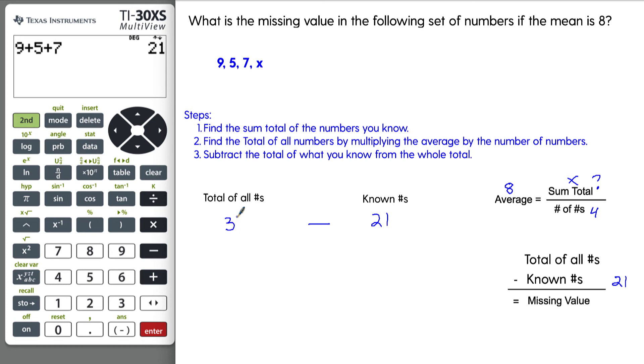So 8 times 4 is 32. Put it in the calculator if you need to. 32 minus 21 is going to be 1 from 2 is 1, and then 2 from 3 is 1, for a total of 11. So our answer here, this missing value, is 11.